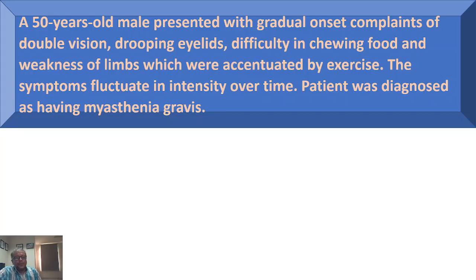The case is: a 50-year-old male presented with gradual onset complaints of double vision, drooping eyelids, difficulty in chewing food, and weakness of limbs, which are accentuated by exercise. These symptoms fluctuate in intensity over time, and the patient was diagnosed as having myasthenia gravis.